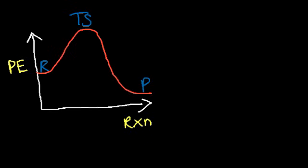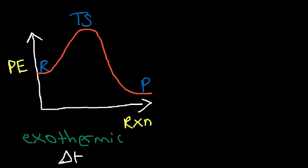Notice that the products have less energy than the reactants. Whenever you see that, this reaction is considered to be an exothermic reaction. 'Exo' means outside — exothermic means that heat is released out of the system into the surroundings. Whenever heat is released, the enthalpy of the reaction is negative. The enthalpy is the difference between the potential energy of the products and the reactants — products minus reactants — and because the products have less energy than the reactants, you get a negative value.